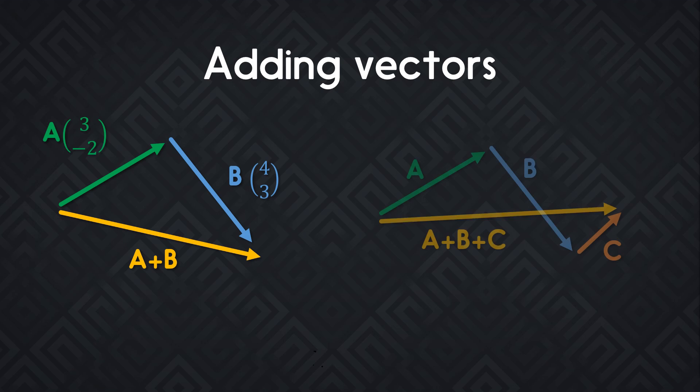This also works with three or more vectors. It's exactly the same. You get a straight line from the start of the first to the end of the last. When you want to calculate the resulting coordinates, you just take the coordinates of the individual vectors and you add them together. The x with the x, the y with the y.